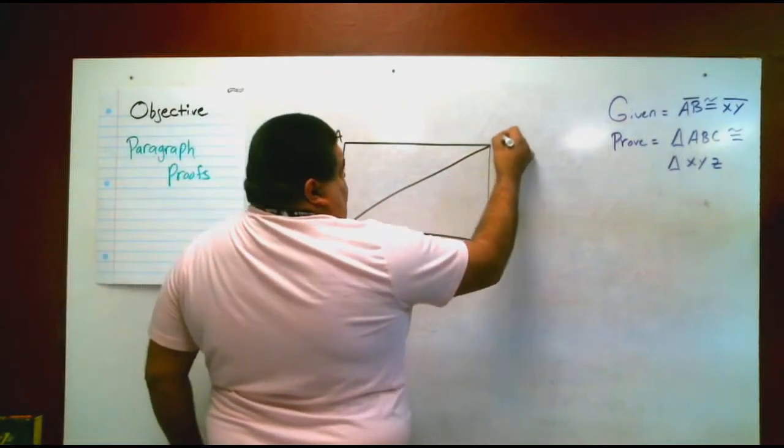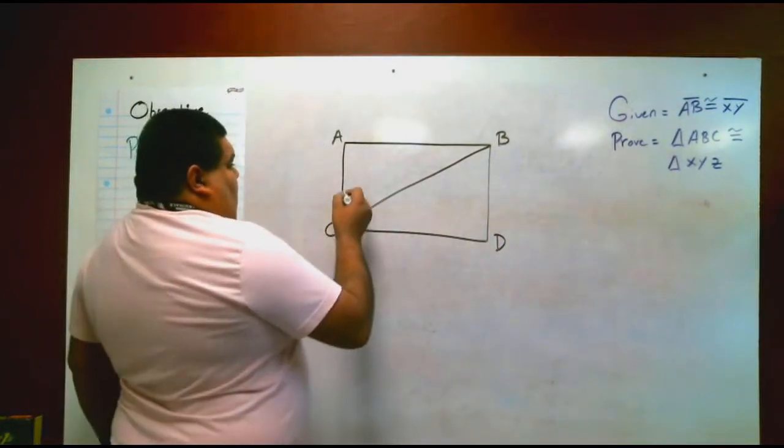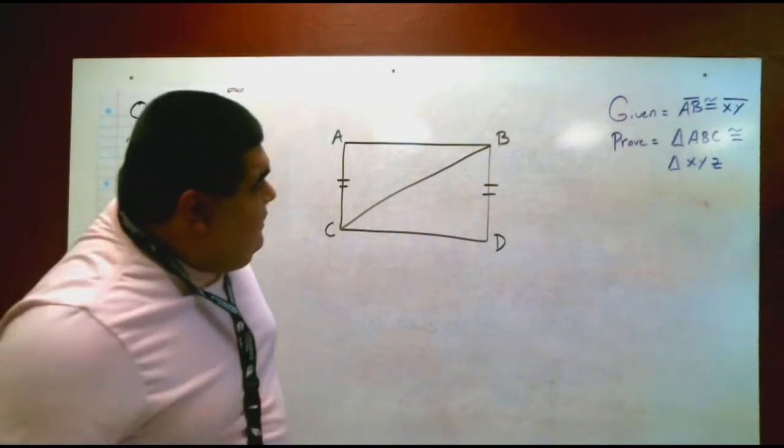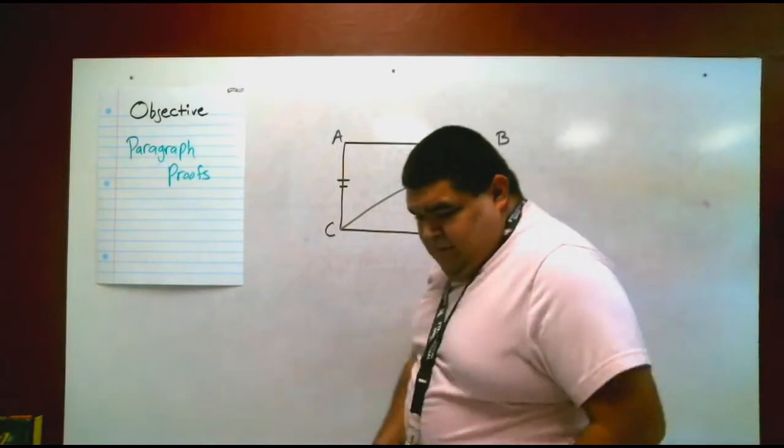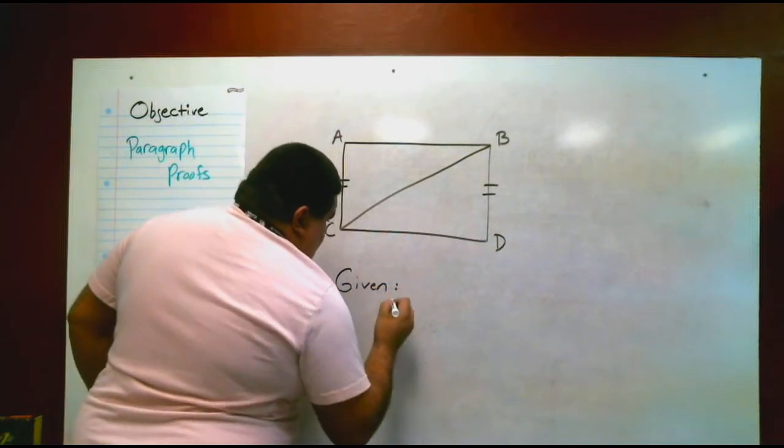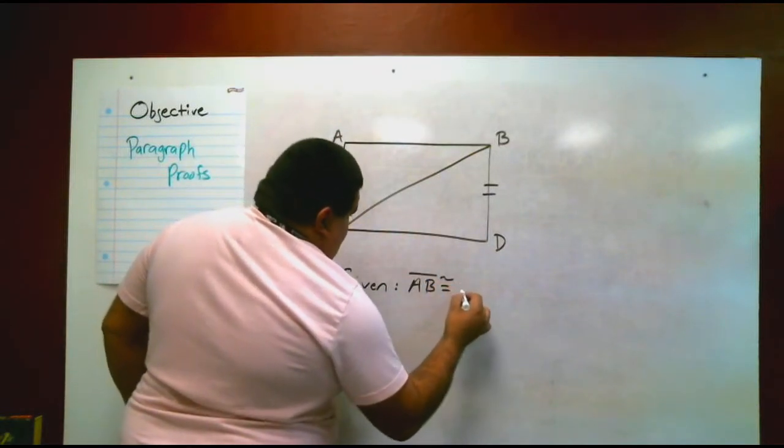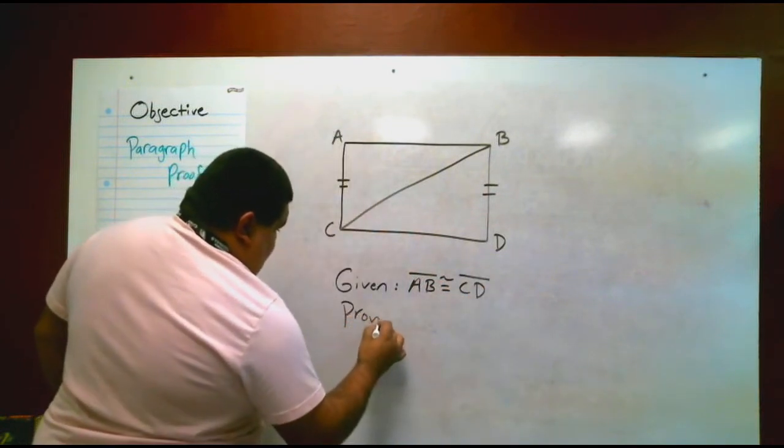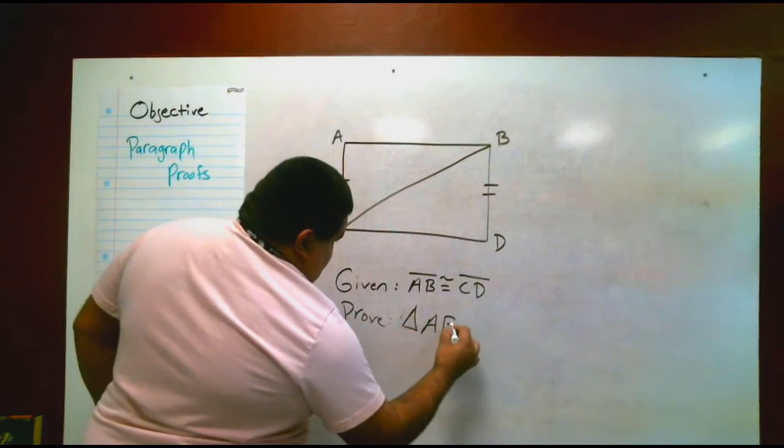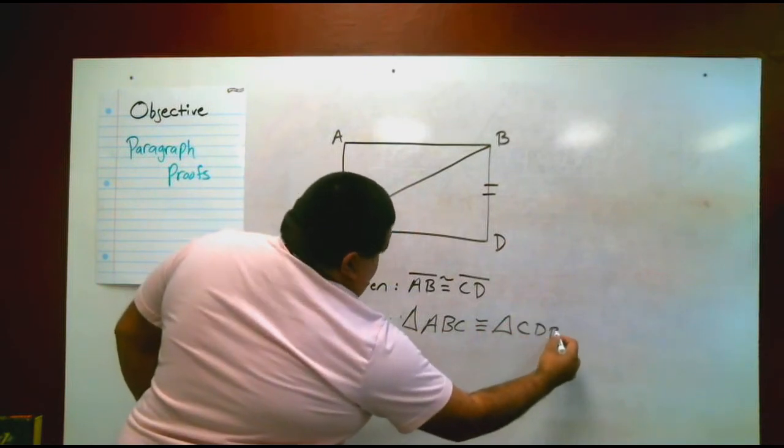We have A, B, C, and D. Obviously A and C are going to be D. That means that it's given, it's given that AB is congruent to CD. Prove that triangle ABC is congruent to triangle CDB.